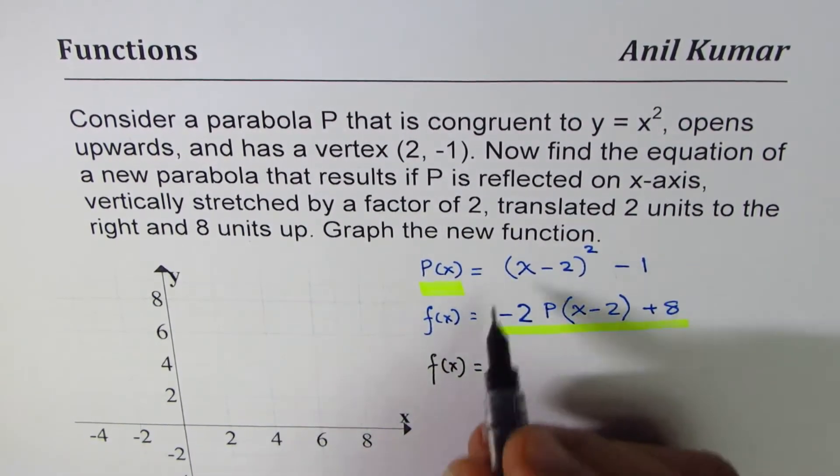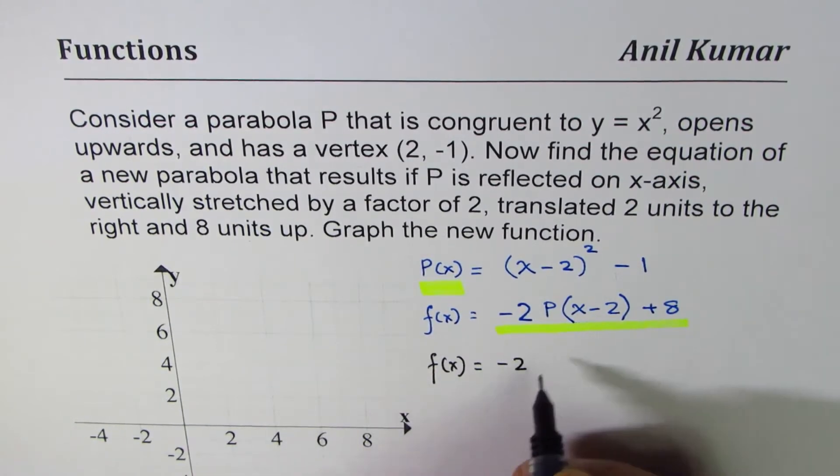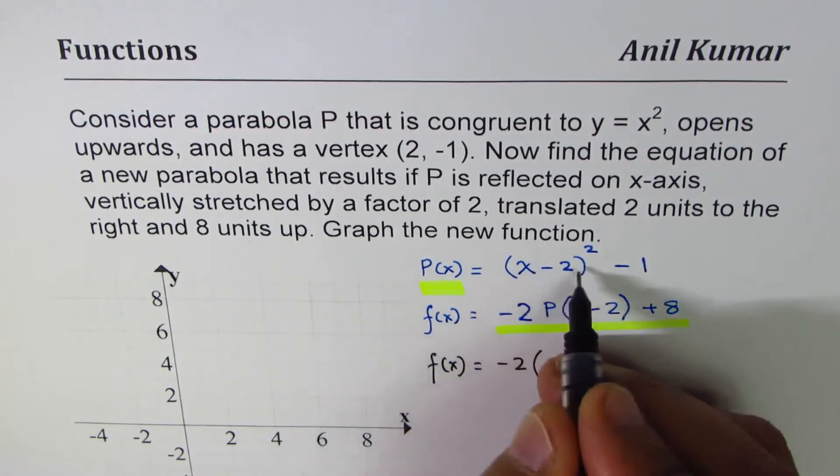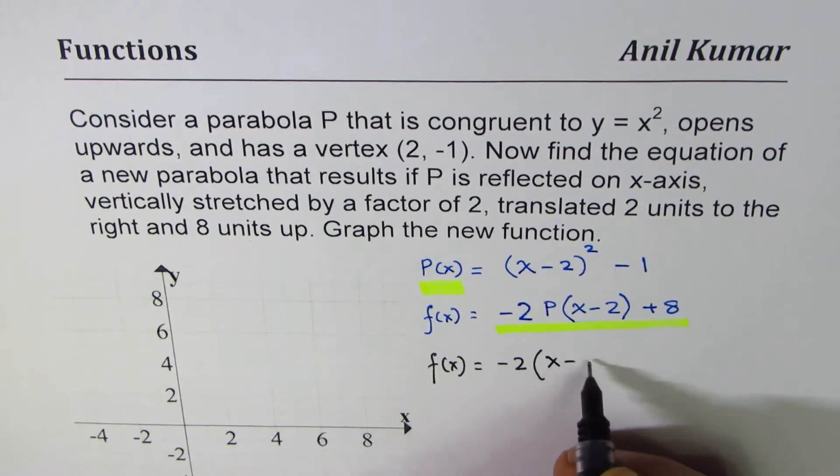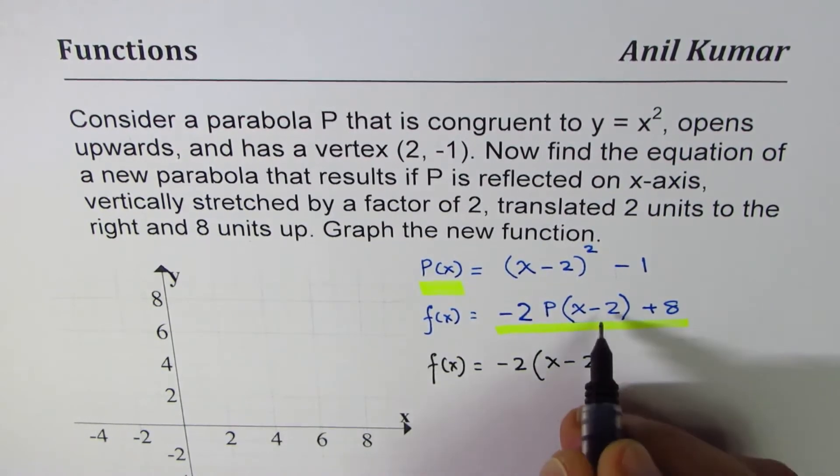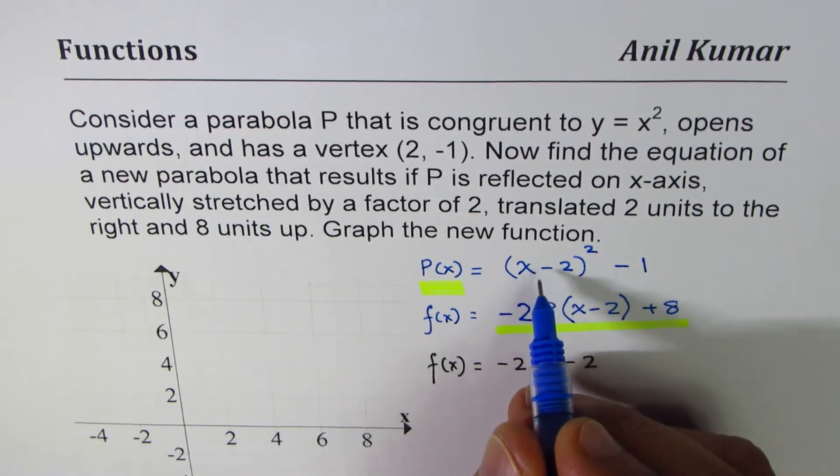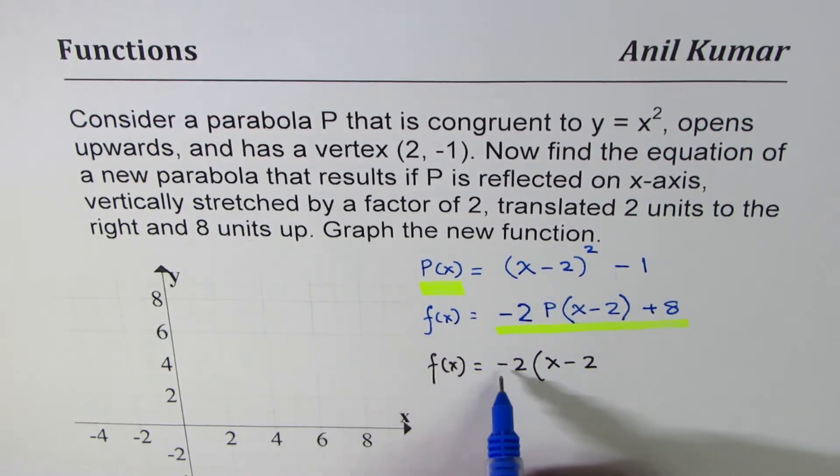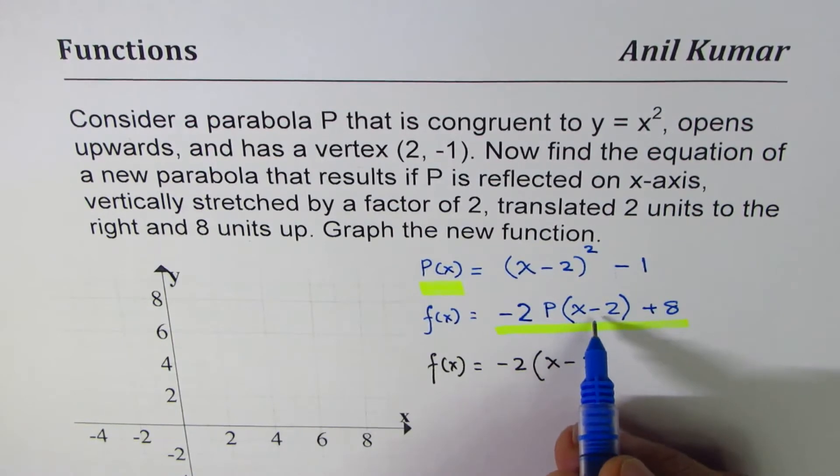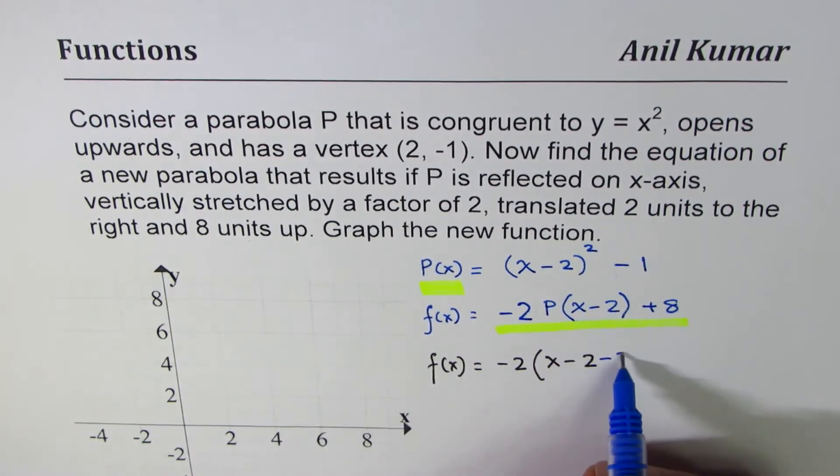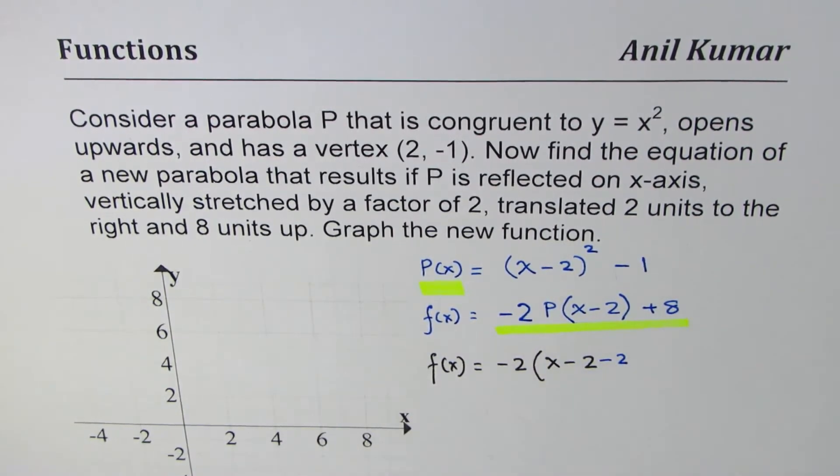So what we should do here is we should write our function as f(x). So that is our function. So in this function, we will introduce these parameters. So we will say -2 times (x - 2) is already there. x - 2 is already there.